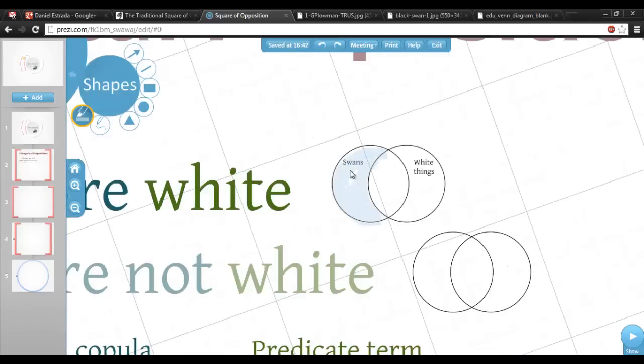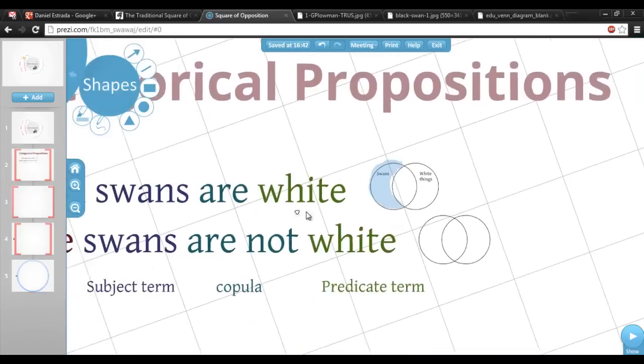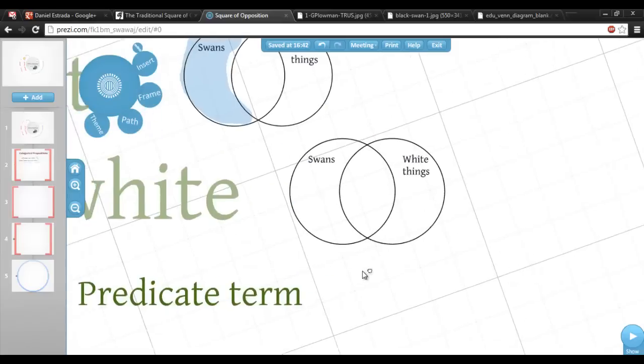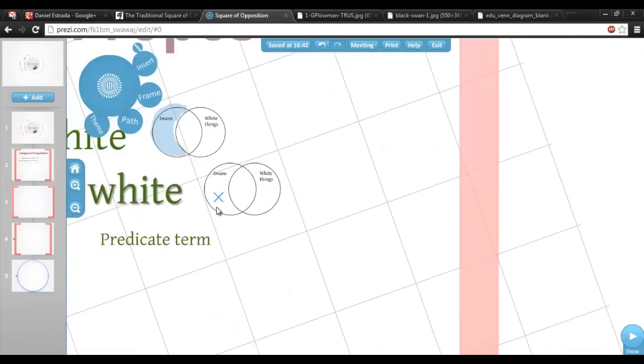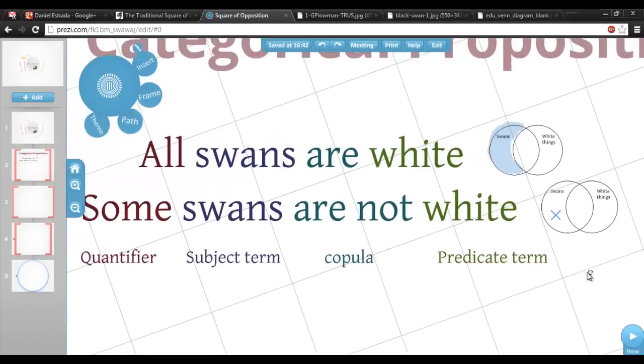If we thought all swans are white, that means that there are no swans that are not white, so we shade in this part. But of course that's false, and we can express the true sentence that some swans are not white by putting an X right here, indicating that some non-white swans exist.